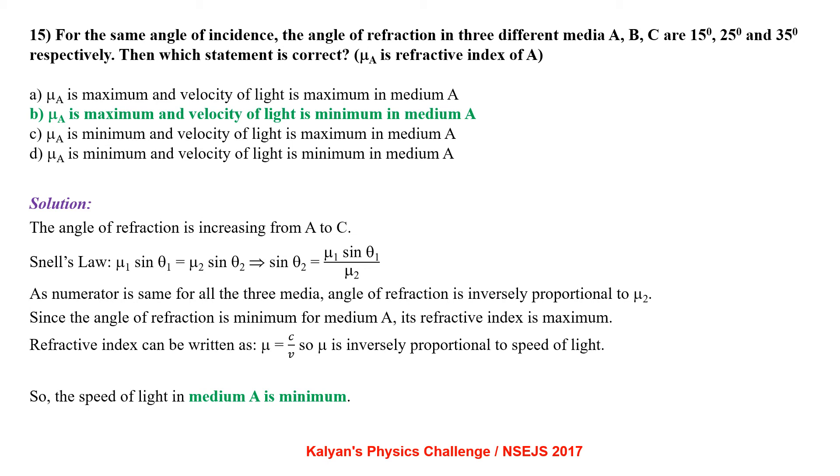The angle of refraction is increasing from A to C. Applying Snell's law, mu1 sinθ1 equal to mu2 sinθ2. From there we get sinθ2 equal to mu1 sinθ1 by mu2. As numerator is the same for all the three media, angle of refraction is inversely proportional to mu2. Since the angle of refraction is minimum for medium A, its refractive index is maximum. Refractive index can be written as mu equal to C by V so mu is inversely proportional to speed of light. So the speed of light in medium A is minimum. So B is the correct option.